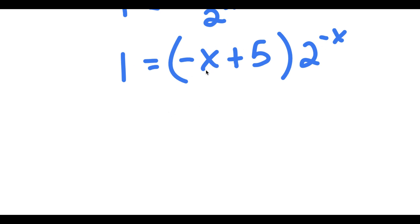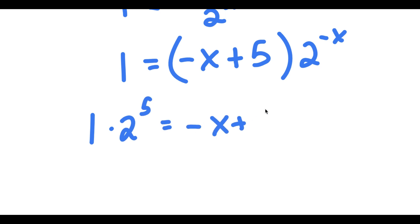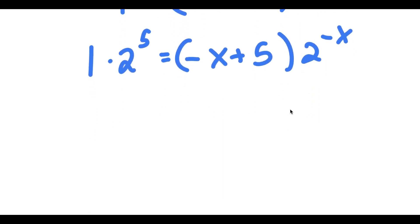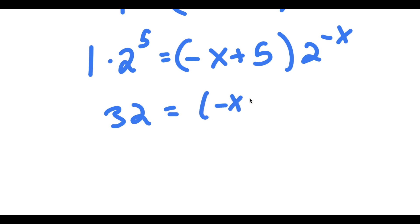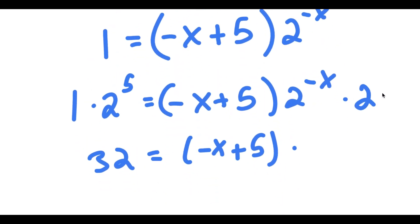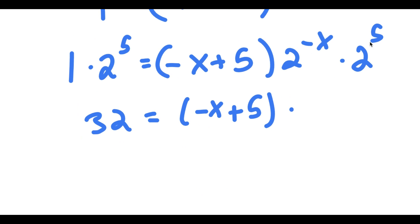If I multiply both sides by 2 to the power of 5, I get 1 times 2 to the power of 5 is equal to negative x plus 5 times 2 to the power of negative x times 2 to the power of 5. And 2 to the power of 5 is 32, so 2 to the power of negative x plus 2 to the power of 5 is 2 to the power of 5 minus x.